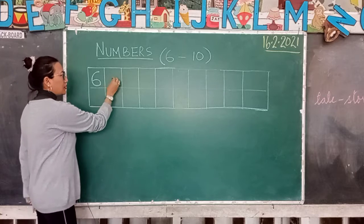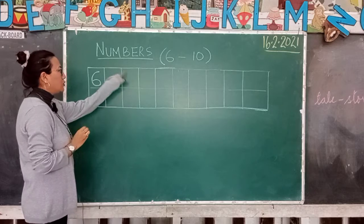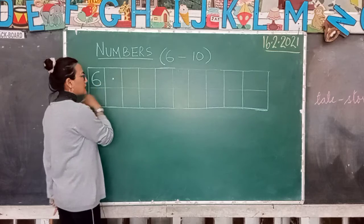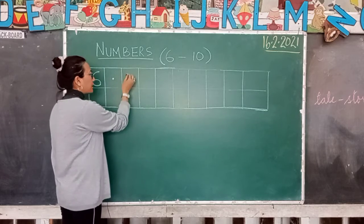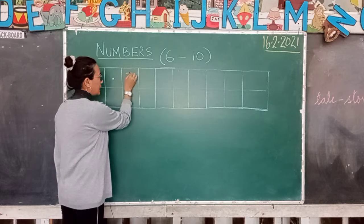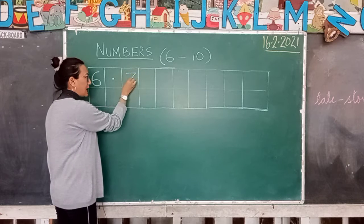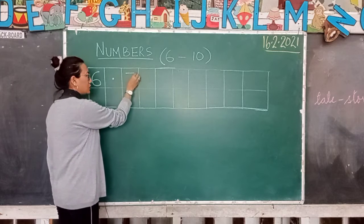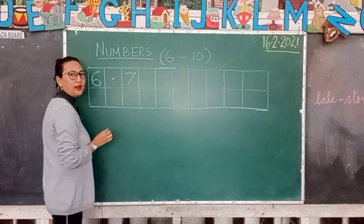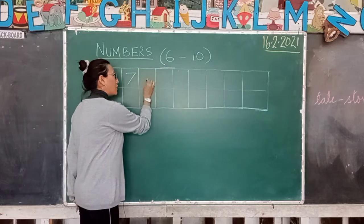Keep this box empty and blank, then go to another box and write number 7. After 6 comes number 7. How do you write number 7? A straight line and a slanting line towards your left — a straight line and a slanting line. This is number 7.